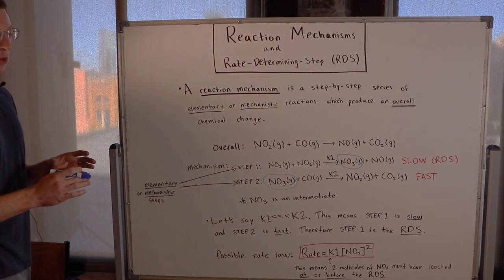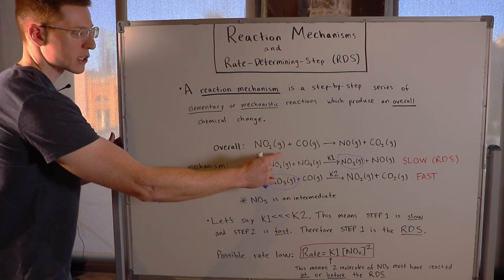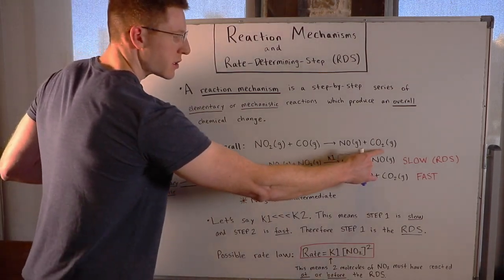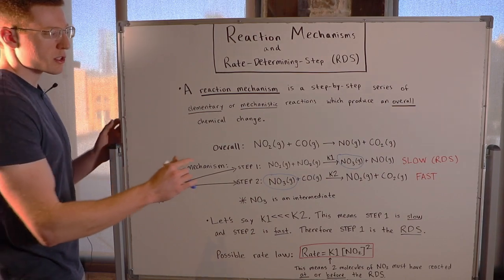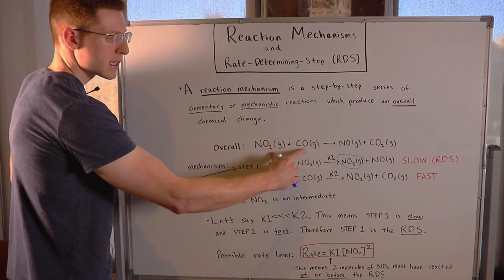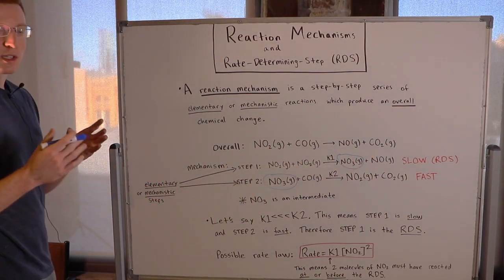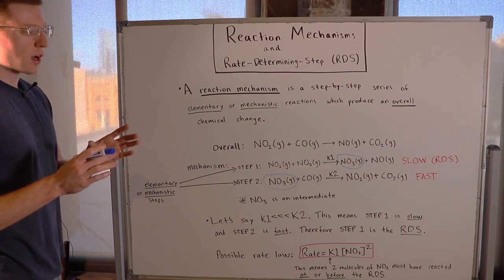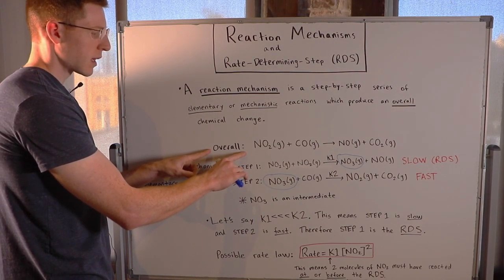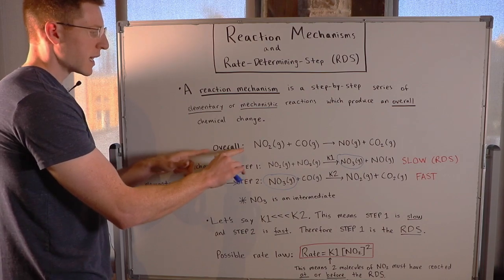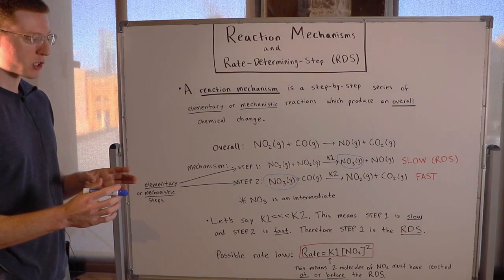I've got an example chemical reaction right here and it's an overall chemical reaction — the sort we're used to seeing in general chemistry. All it shows are the reactants and the products, and of course we have a balanced equation. But we can actually be a lot more descriptive than this. We can take this overall chemical reaction and break it down into its elementary or mechanistic reactions.